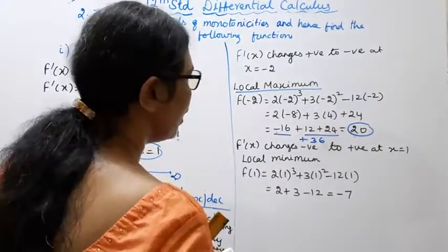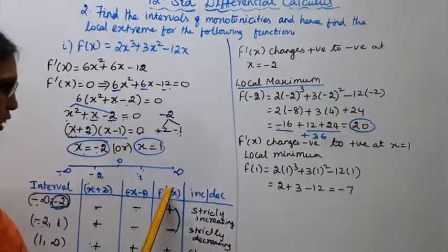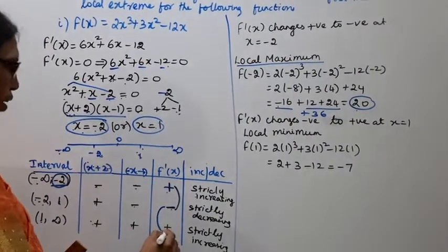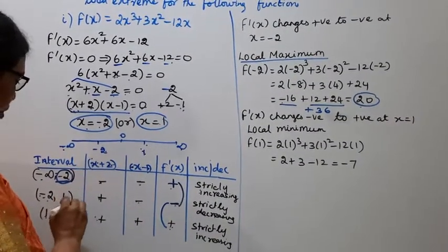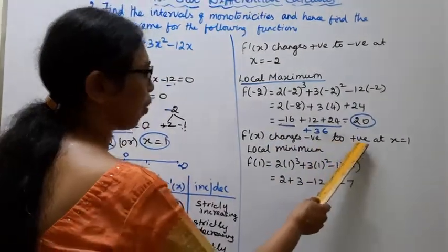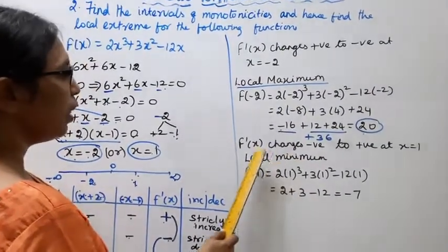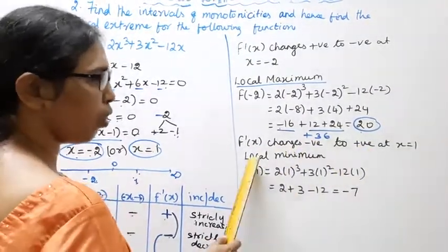f dash of x changes negative to positive at x equal to 1. f dash of x changes negative to positive at x equal to 1, local minimum. Negative to positive is local minimum, f of 1.